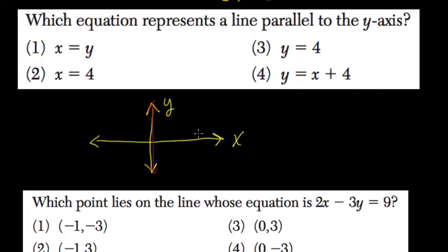So for example, you can have a vertical line here. Maybe that's at x equals 1, 2, 3, 4, 5. So here x is always equal to 5, but y could be any point above or below the line.